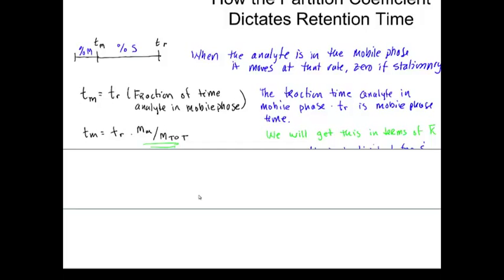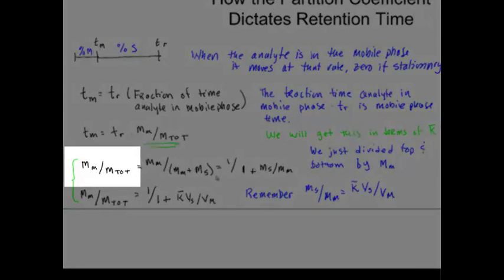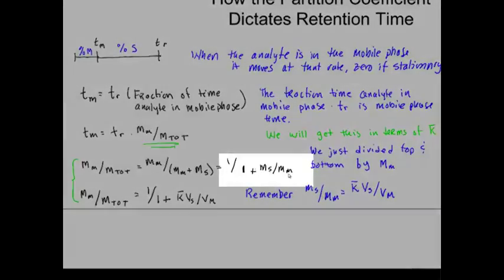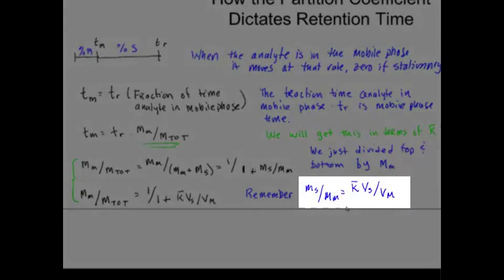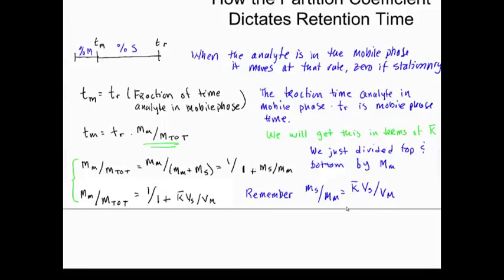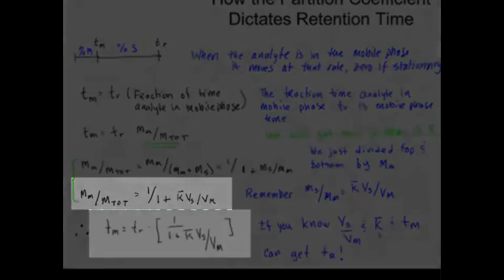Now, we're going to take that m sub m over m total and see if we can relate that fractional, the fact that there's 30% of the total moles of m is in the stationary phase at any given time, to the partition coefficient. We're going to do that simply by taking this expression, dividing the top and bottom by m sub m, and we're going to be left with this m sub s over m sub m. But remember, what I just derived for you before was that that ratio is equal to the partition coefficient times the ratio of the stationary volume over the mobile phase volume. So, you can simply substitute that particular term in, and you end up with this expression, which relates the T sub m to T sub r.